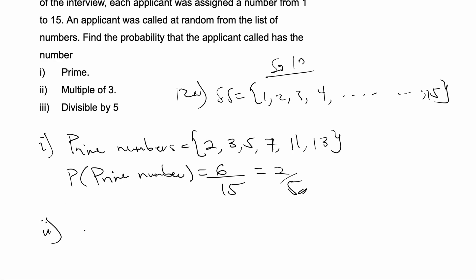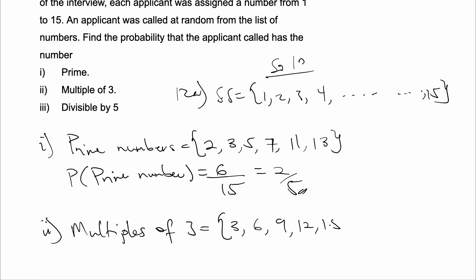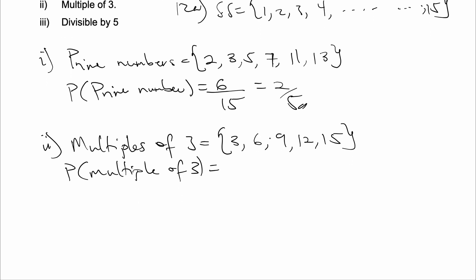For part II, let's list all the multiples of 3 in our sample space. Multiples of 3: we have 3, 6, 9, 12, and 15. The probability of selecting a multiple of 3 is equal to the total number of multiples of 3 in our sample space, which is 5, over the total number of values in our sample space, which is 15. And this is equal to 1 over 3.